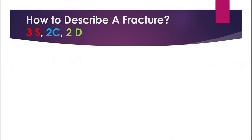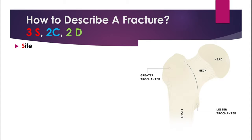After identifying the fracture, you will need to describe it using the 3S, 2C, and 2D method. The first S is site — state whether this is an intracapsular or extracapsular fracture. Intracapsular fractures are further divided into neck of femur or head of femur, whereas extracapsular fractures are further divided into intertrochanteric fracture and subtrochanteric fracture.